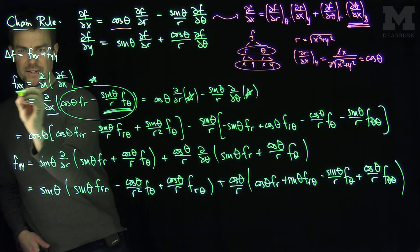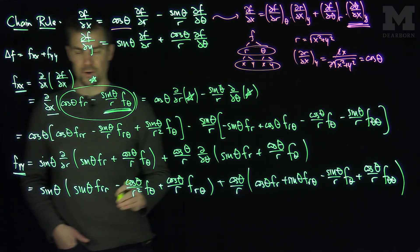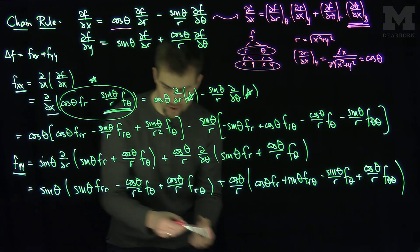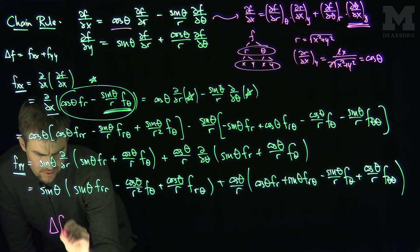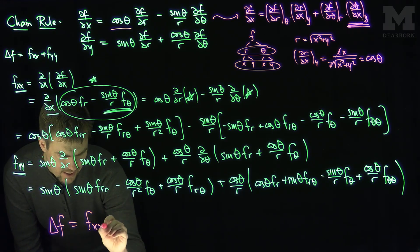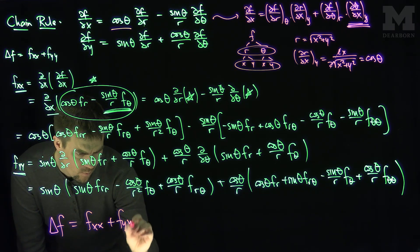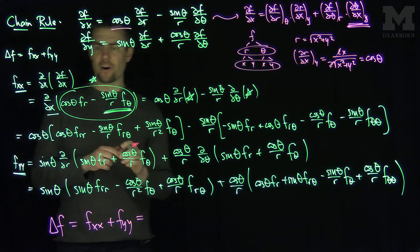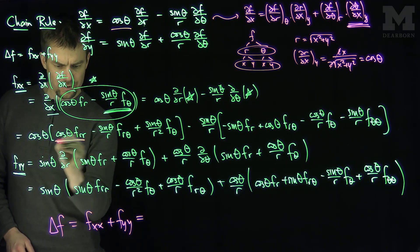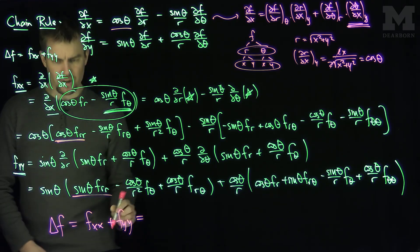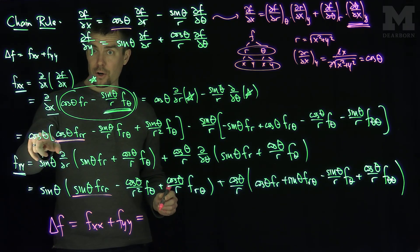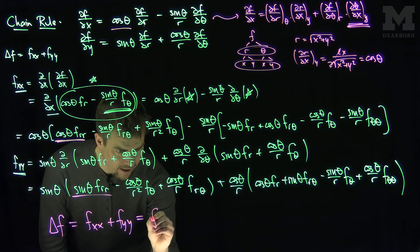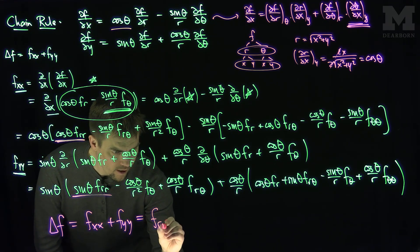Now let's put fxx + fyy together. Looking at the frr terms: fxx contributes cos²θ·frr and fyy contributes sin²θ·frr. Together, cos²θ + sin²θ = 1, so we simply get frr.